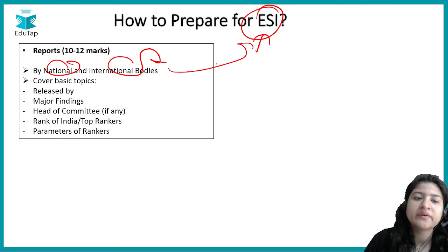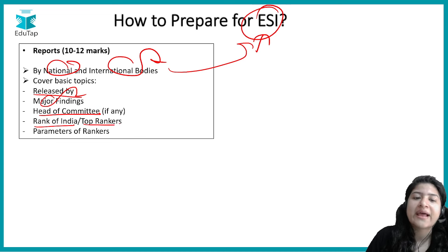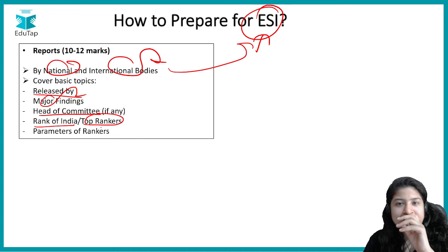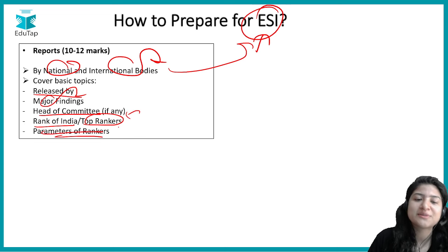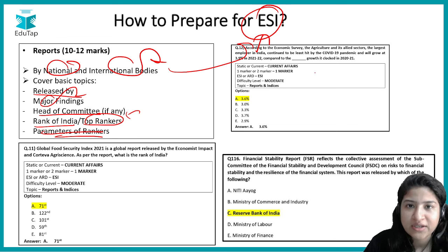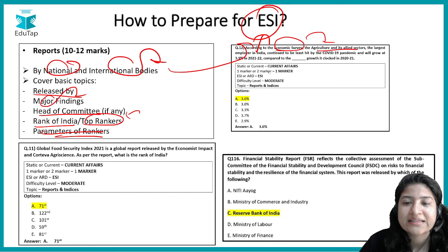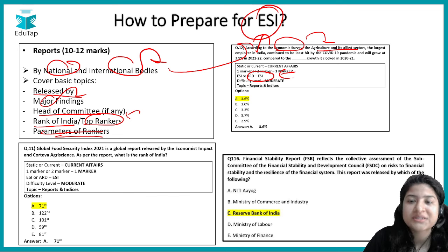For each report, you need to cover: which organization released it, the major findings, the head of the committee (if any), India's ranking, the top rankers, and the parameters on which ranking is done — as those parameters can sometimes be asked. For example, one question asked about agriculture and allied activity according to the Economic Survey — confirming that since agriculture is part of the ESI syllabus, such questions appear in ESI.